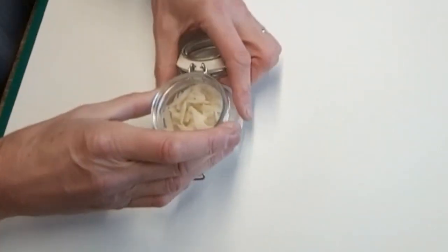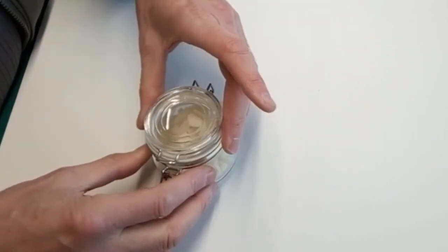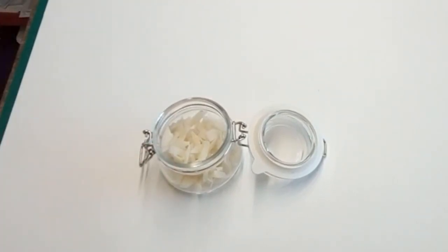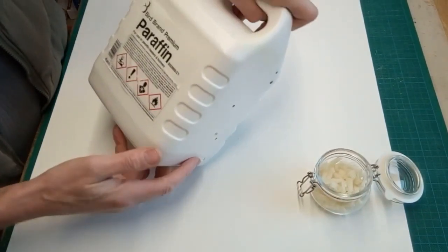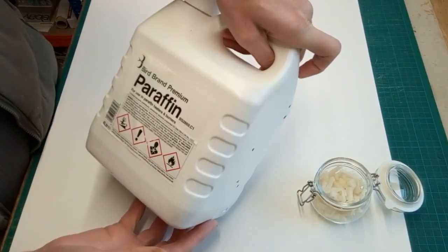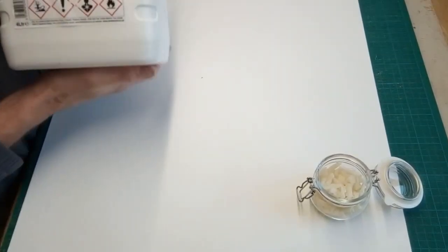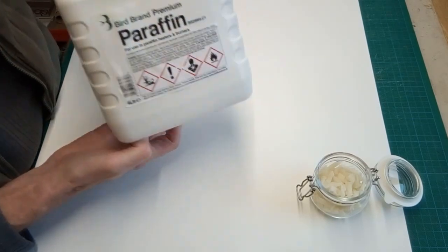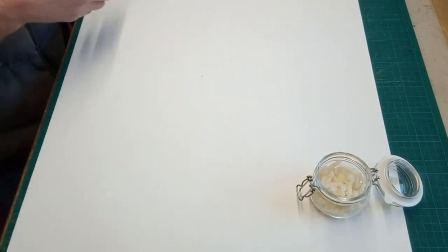When you've done that, you'll end up with a whole load of these pieces. Just put them into a jar, something that's got an airtight lid. What we're now going to do is put some paraffin into that. The paraffin that I've got is just standard paraffin for use in paraffin heaters, nothing special, just cheap from the hardware store. Unfortunately, I could only find a rather large container which is going to last me several lifetimes, but it's not expensive.